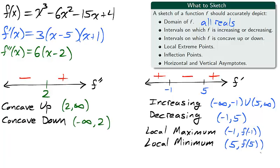Using the concavity test, f is concave up from 2 to infinity, while f is concave down from negative infinity to 2. The only inflection point for f is 2 f of 2.